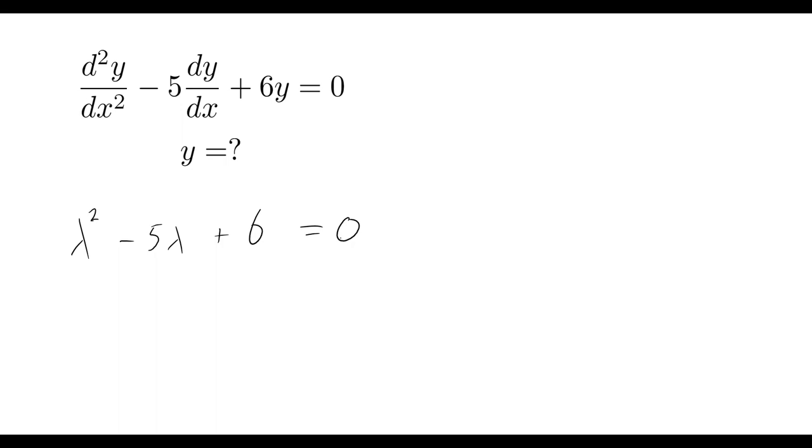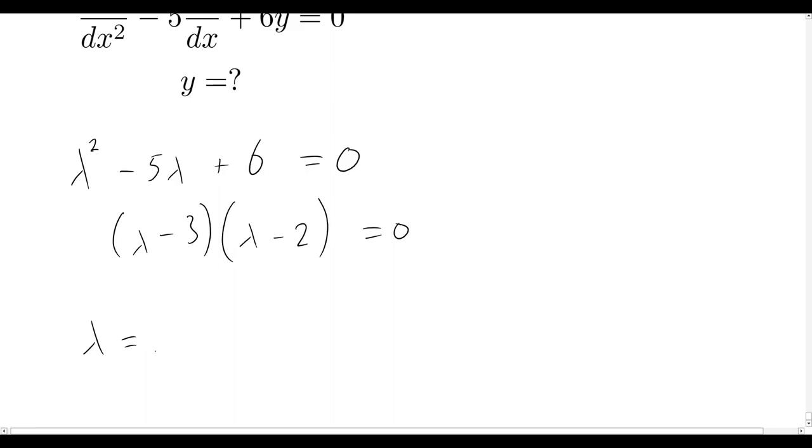To quickly solve this, let's just factorize. Nothing too difficult here—we'll be factorizing it into lambda minus three and lambda minus two equals zero. That means our two different values for lambda are going to be positive two and positive three.